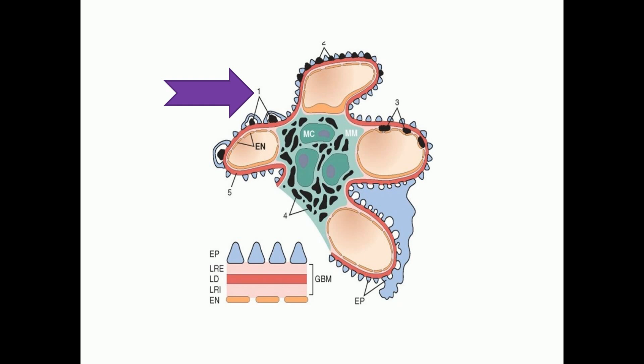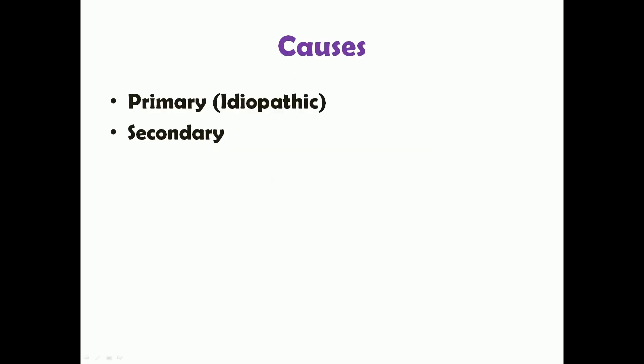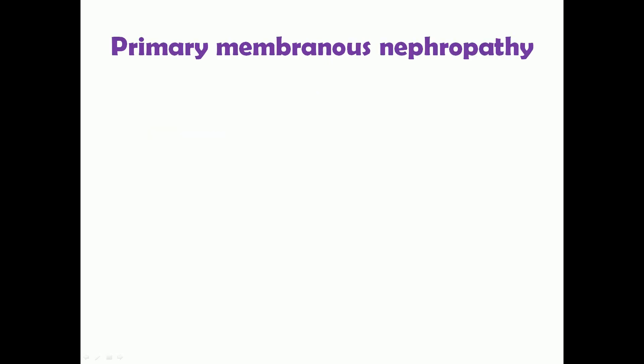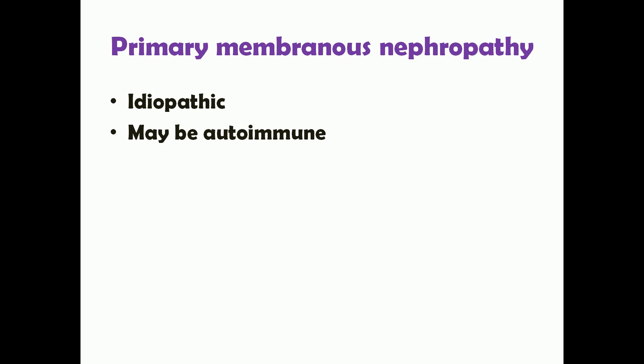Membranous nephropathy can be primary or secondary. When there is no clear known cause it is called primary membranous nephropathy, which is idiopathic. When there are identifiable causes that led to membranous nephropathy, it is classified as secondary membranous nephropathy.